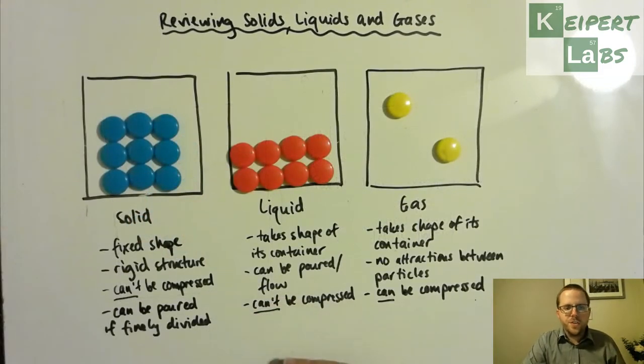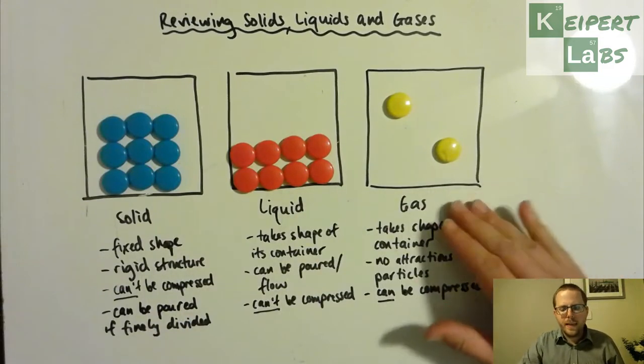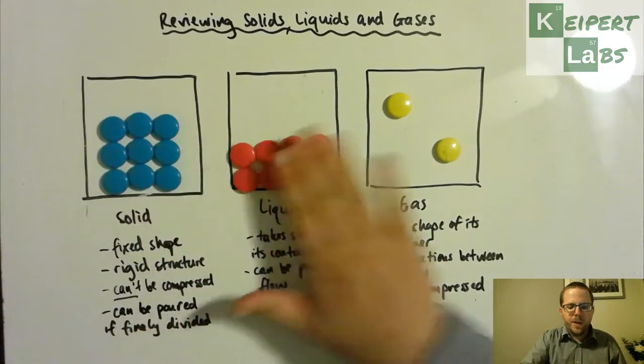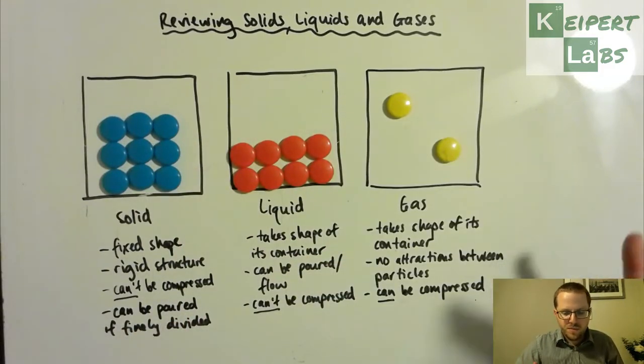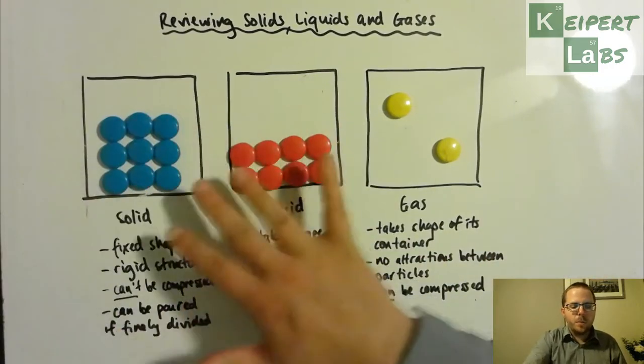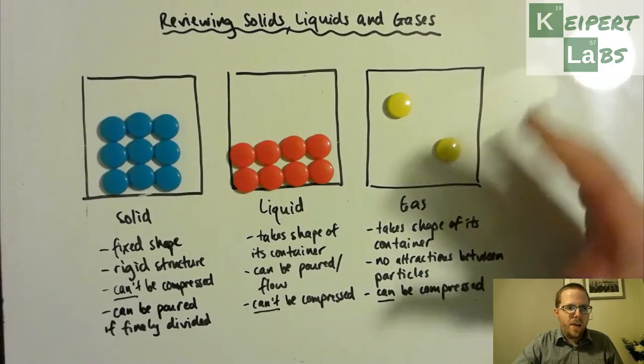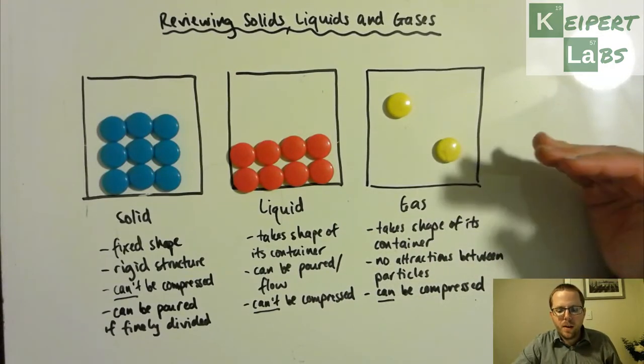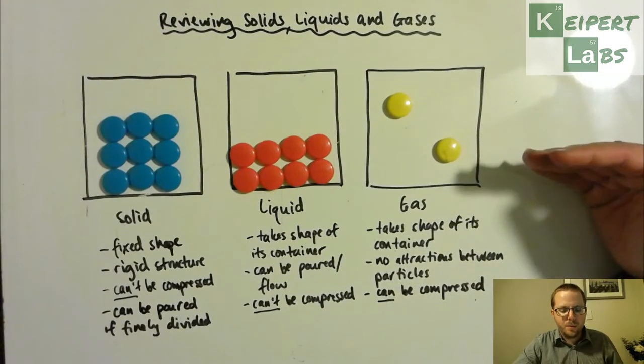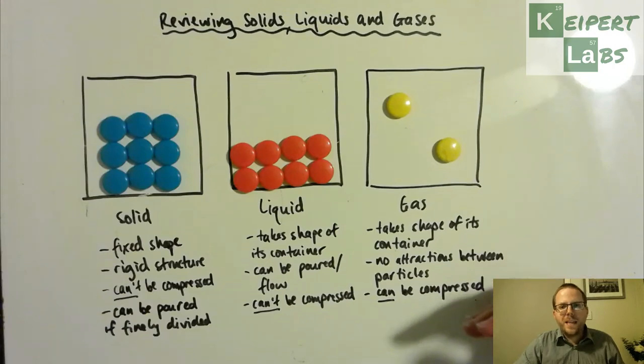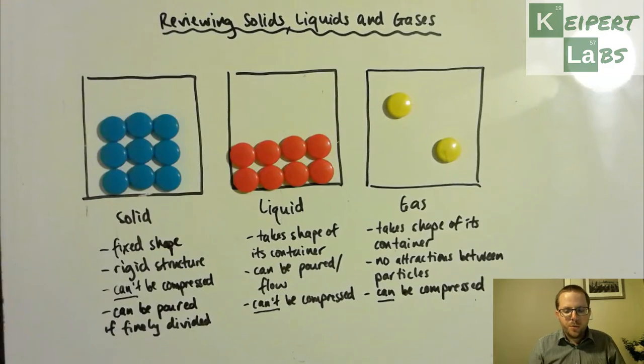Here we have some representations of particles in a solid, a liquid and a gas. Now the colour coding here, the fact that I've got blue, red and yellow doesn't mean anything in particular. It's just because that's what I have on hand that I can use. So each of these boxes represents a sample of that type of substance. And the way that the particles are situated is representative of how we represent them to be at the particle level. And then underneath, I've written down some of the features of each state of matter or phase of matter, which is the other word that chemists would use to describe this. So we're going to go through each one in turn.